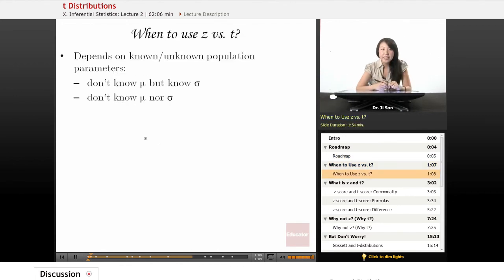So first off, when do we use Z versus T? We covered it in previous sections where we looked at whether we knew the population parameters or not. In hypothesis testing, we frequently don't know the mu of the population, but sometimes we are given sigma for some reason or another. And in this case, we use Z in order to figure out how many standard errors away from the mean we are in our SDOM.